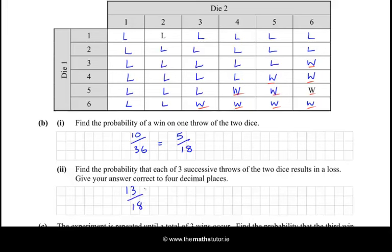And then we multiply that by 13 over 18 and multiply that by 13 over 18. So we could just raise that to the power of 3. And if we calculate that on the calculator it comes to 0.3767164. So to 4 decimal places we'll have 0.3767.